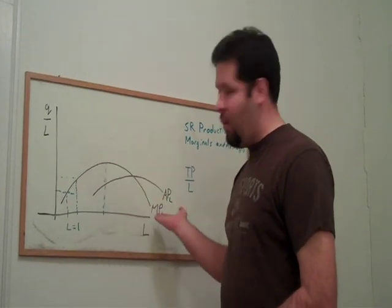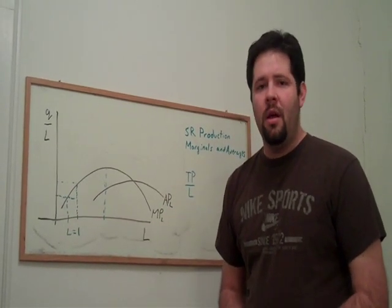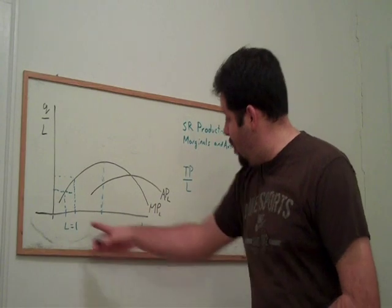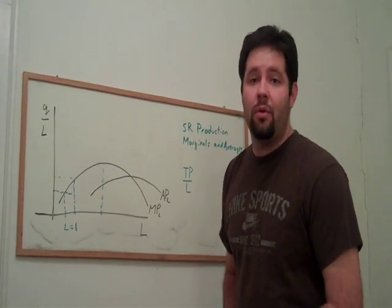So that's why we have this inverted U-shaped marginal product curve. So that's sort of a standard way to think about it. Short-run production analysis with one variable input with some other fixed inputs.